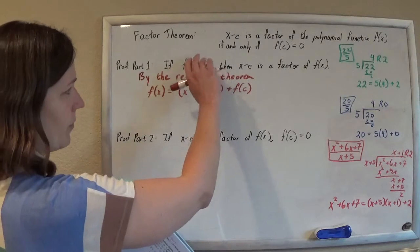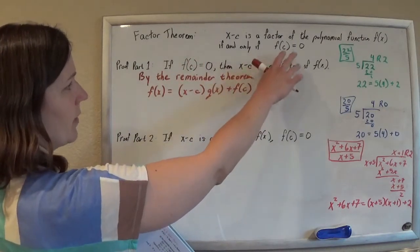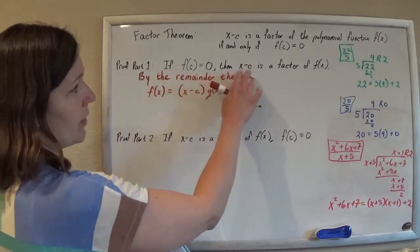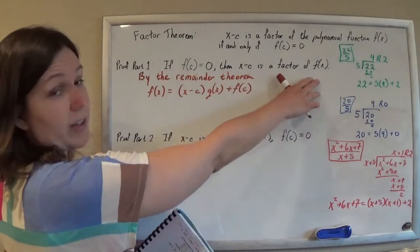So for the, we have to prove if and only if f of c equals zero. So the if part, the forward part, if f of c equals zero, then x minus c should be a factor of f of x.